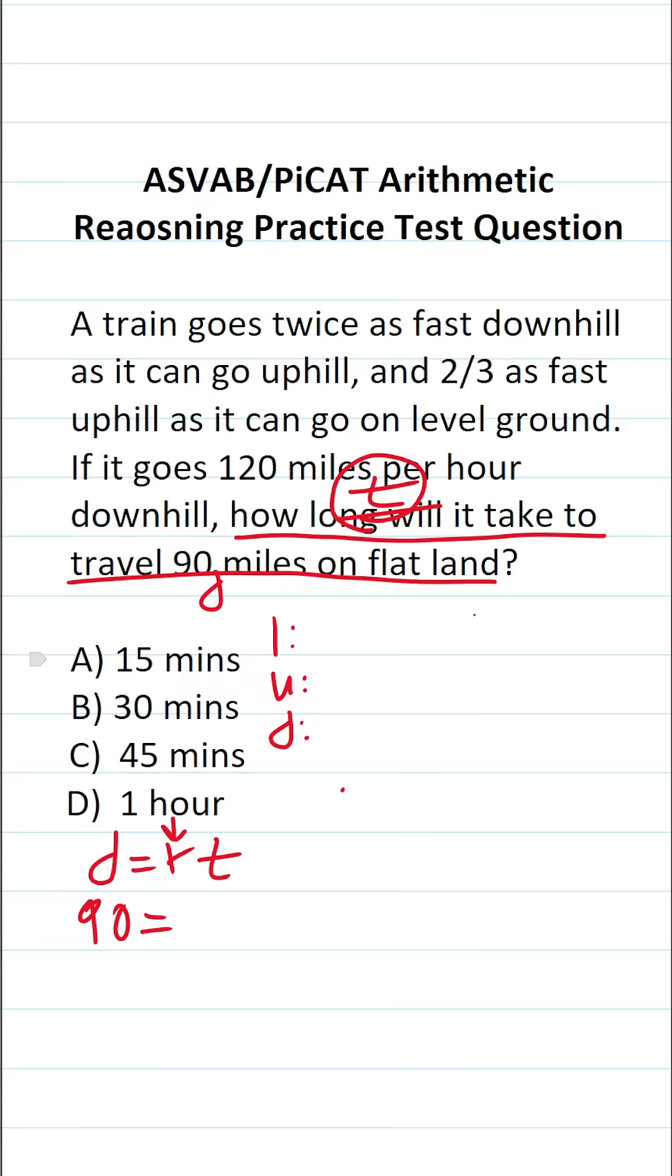Let's go ahead and set up a little equation to solve this one. Its rate of speed across level ground is going to be X miles per hour. According to the problem, it goes two-thirds as fast uphill as it goes across level ground. So its rate uphill is going to be two-thirds X. And finally, we know it goes twice as fast downhill as it can go uphill. So that's going to be two times two-thirds X, which is going to be four-thirds X.